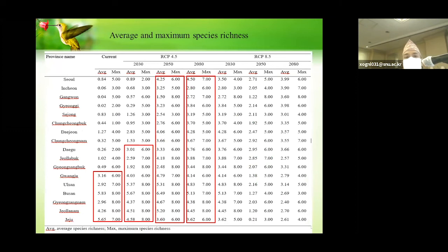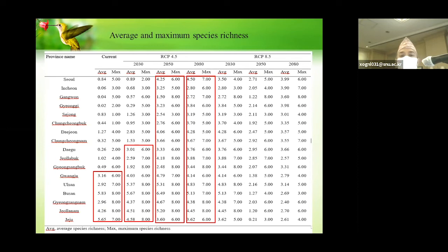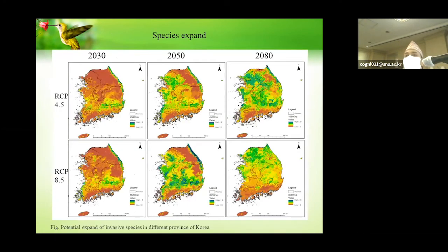We calculated the average and maximum species richness in each province from Jeju to Seoul — from the southern to the northern parts. Currently, average and maximum species richness is concentrated in the southern regions such as Jeju, Jeollanam-do, and up to Gwangju. But in 2030, 2050, and 2080 it is increasing continuously northward. By 2080, in Seoul the maximum richness will be 7, whereas currently it has just 5. New habitat expansion areas in the central and northern regions are also increasing continuously into the future.